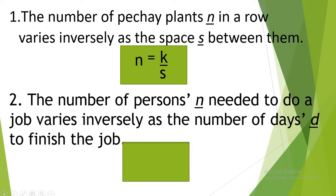Number 2: the number of persons N needed to do a job varies inversely as the number of days D to finish the job. Our two variables are the number of persons N and the number of days D. From Y is equal to K over X, our first variable is N and the second variable is D. So our equation is N is equal to K over D.